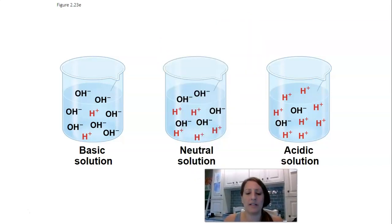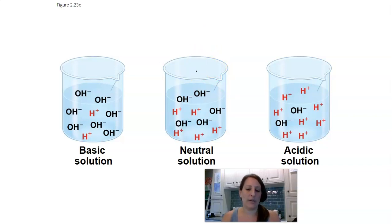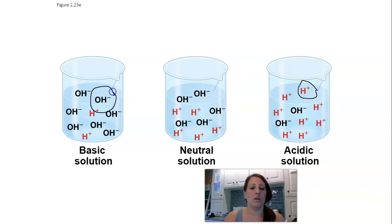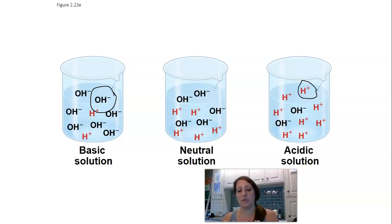In a neutral solution, if you count up the number of hydroxide (OH–) and hydrogen (H+) ions, you'd find there's an equal number. In an acidic solution, there are a lot more H+ ions compared to hydroxide ions. In a basic solution, there are a lot more hydroxide ions compared to hydrogen ions. So below seven is acidic and above seven is basic.